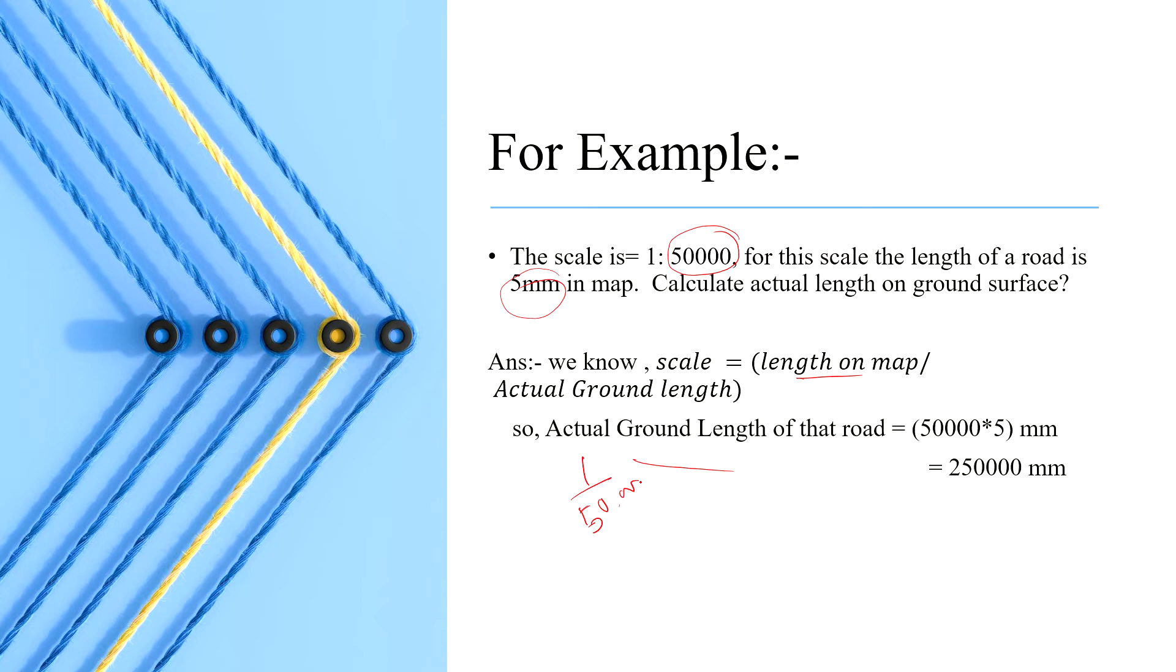and length of the map is 5 mm divided by actual ground length. For actual ground length, the value will be 5 into 50,000, which is here, and the value is 2,500,000 mm.